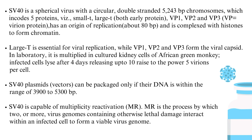In the laboratory, SV40 is multiplied in cultured kidney cells of the African green monkey. Infected cells lyse after four days, releasing up to 10^5 virions per cell. SV40 plasmids can be packaged only if their DNA is within the range of 3,900 to 5,300 base pairs. SV40 is also capable of multiplicity reactivation.